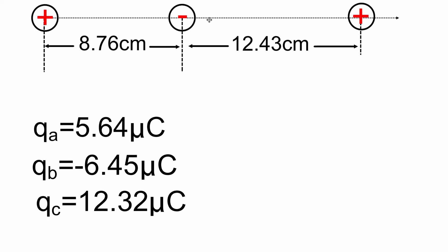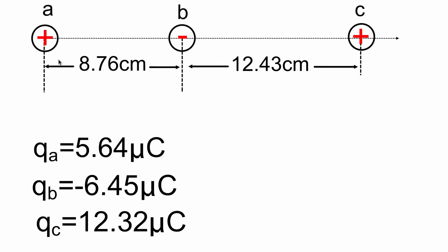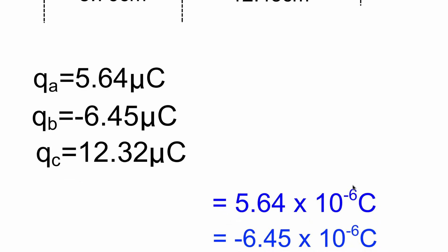We have positively charged A, negatively charged B, and positively charged C. The force between B and A is going to be attractive — opposites attract — so B will be pulling A towards the right. When we look at the interaction between C and A, because both are positively charged, C will be pushing A towards the left.